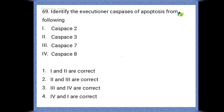Identify the executioner caspases of apoptosis from the following. The correct option is the second one — caspase 3 and caspase 7 are the executioner caspases.